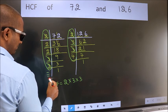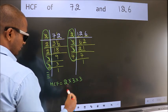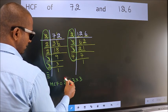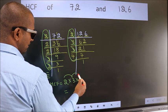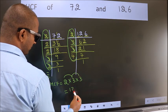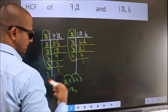No more numbers have been left out. So our HCF is 2 into 3, 6 into 3, 18 is our HCF.